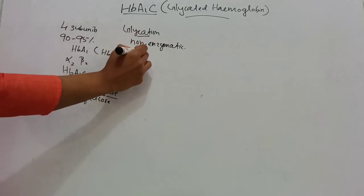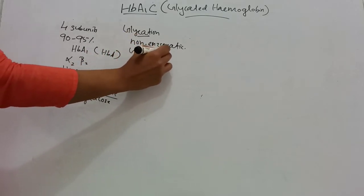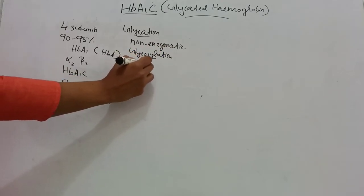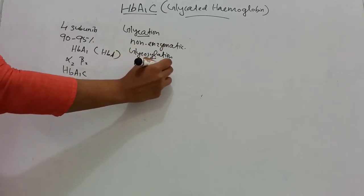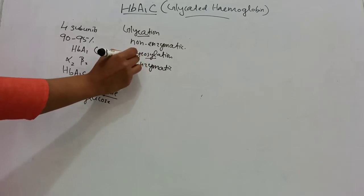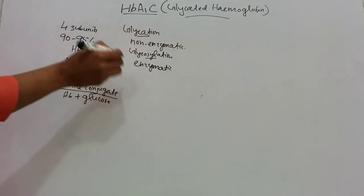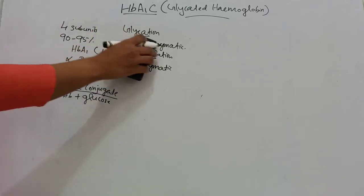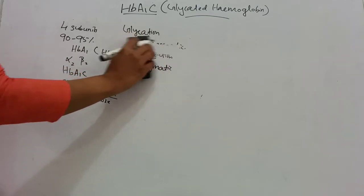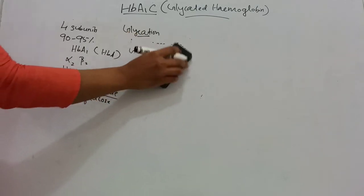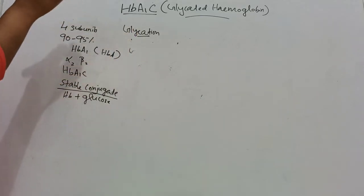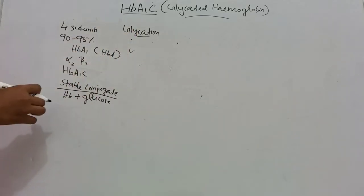Whereas glycosylation is enzymatic addition of sugar. This glycosylation is a form of co-translational or post-translational modification. Coming back to glycation, this is the covalent attachment of free sugars to proteins. Here, the protein is hemoglobin, and it is a non-enzymatic process.